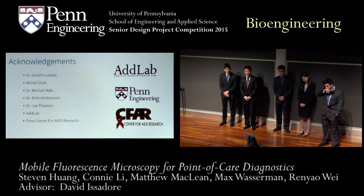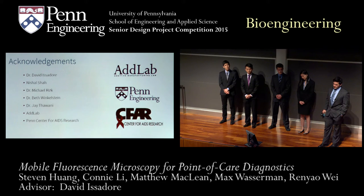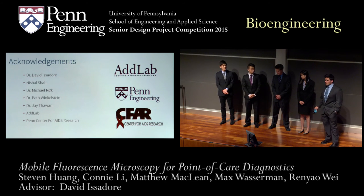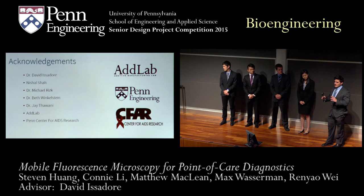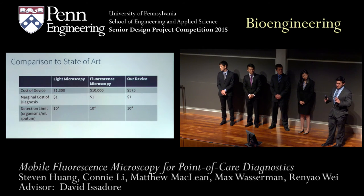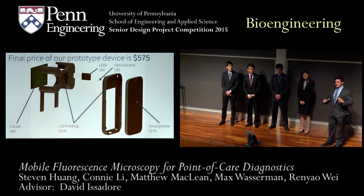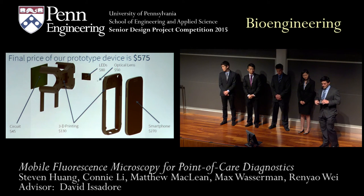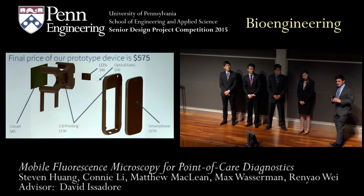The price of the fluorescence microscope you were comparing — was that retail? How much would the device you've made sell for? So we showed the prototyping cost, but in terms of mass-scale manufacturing it would be around $70. Between injection molding versus 3D printing and getting large-scale PCBs, much of the prototyping was done with components that have a lot of excess parts we don't actually use. So we estimate about $70 for the final product, excluding the cost of the smartphone.